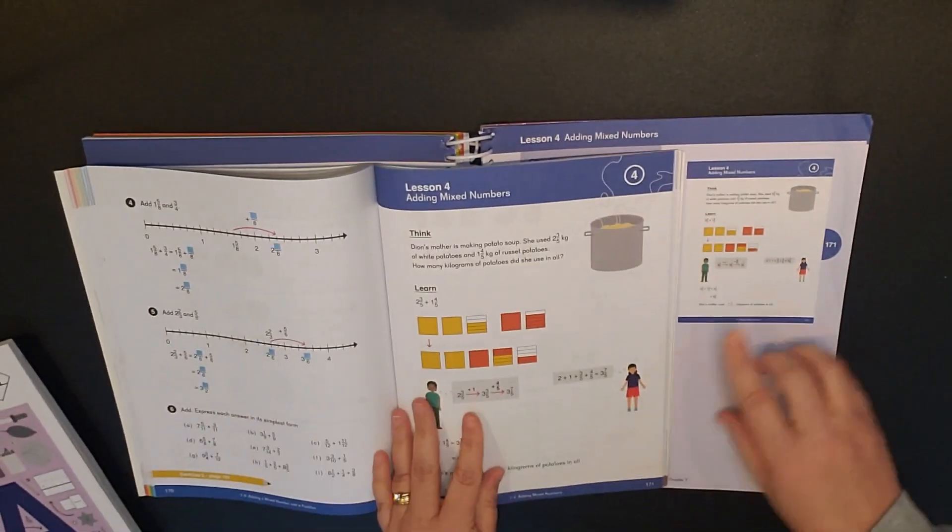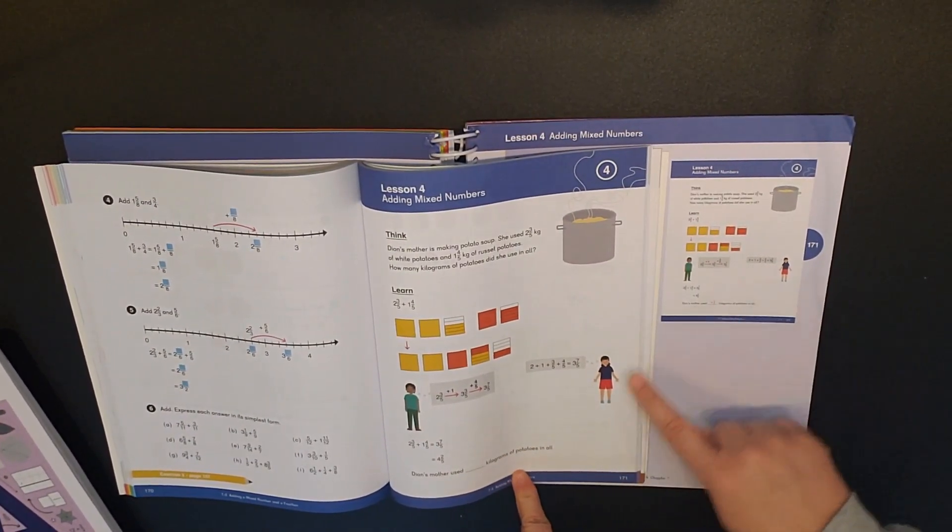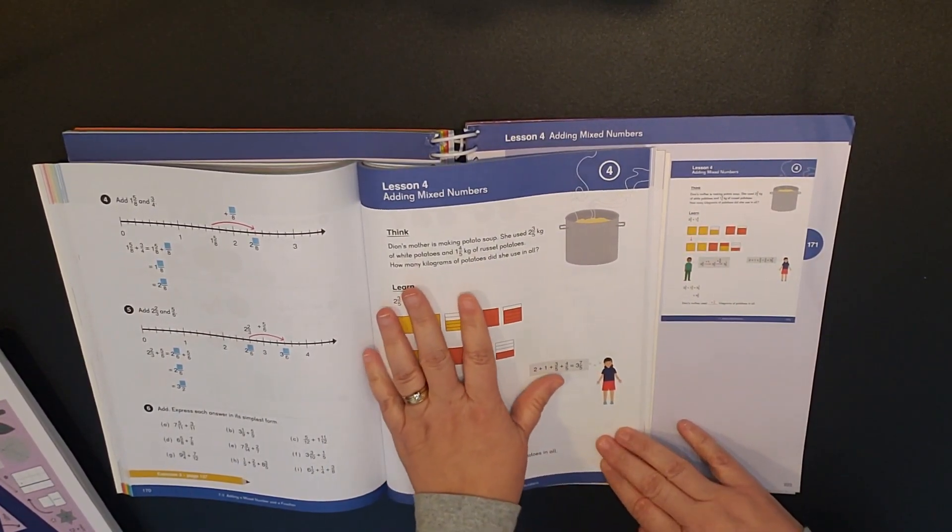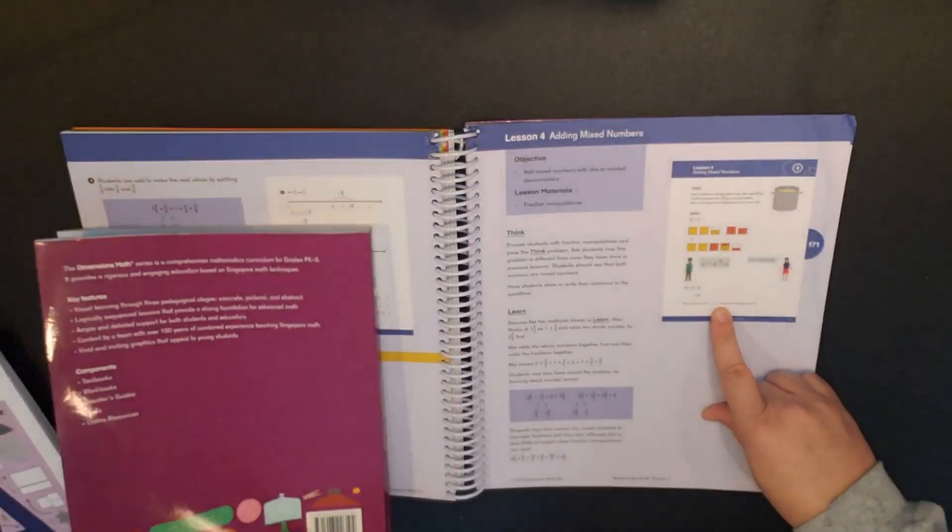And they have the full page of the textbook on here. So for example, this is from the textbook, textbook 4A, page 171 and it is a full color exact replica of what the student will have in their textbook except this just has the answers in it as well.